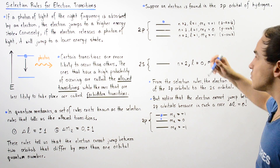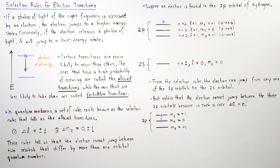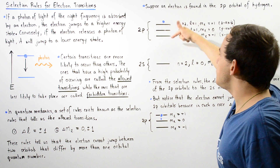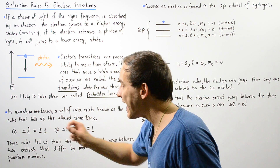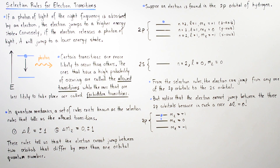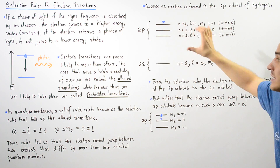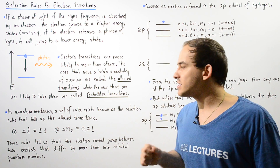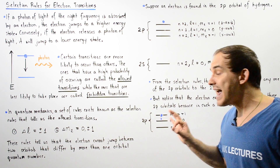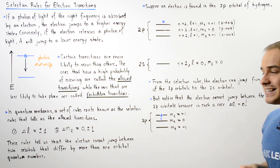On the contrary, suppose our electron wants to transition from the 2pz to the 2py, or from the 2py to the 2px — can that actually take place? The electron cannot jump between any of these three 2p orbitals, because in such a case the change in the orbital quantum number, delta L, would be equal to zero, and delta L equal to zero is not allowed. These transitions are therefore known as the forbidden transitions. Even though they are called forbidden, they can still take place, but there is a very small probability that such a transition will actually occur.